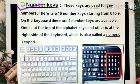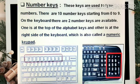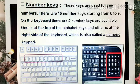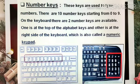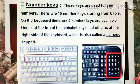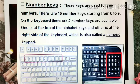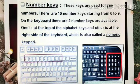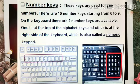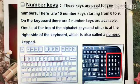Next come the number keys. These keys are used to type numbers. There are 10 number keys starting from 0 to 9. On the keyboard, there are two number key areas available — one is at the top of the alphabet keys and the other is at the right side of the keyboard, which is also called a numeric keypad. As you can see in the below picture, the keyboard is being shown.